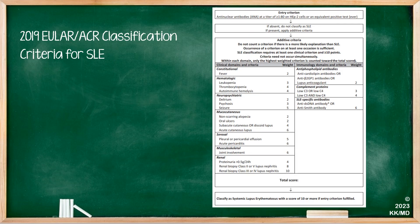This is the updated 2019 criteria jointly used by the European League Against Rheumatism and American College of Rheumatology. It is still quite similar to previous guidelines. However, the important thing to note is that in order to be diagnosed with lupus, you really need to have a positive ANA. If you don't have a positive ANA, you pretty much cannot have SLE. So in an exam question, if they describe a multi-systemic disease but give you a negative ANA, you can pretty much exclude SLE as an option.